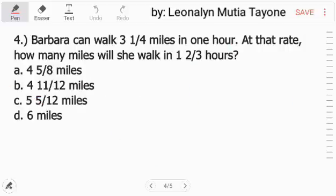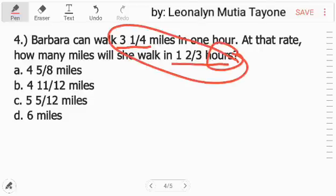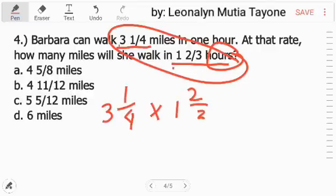Question number 4, Barbara can walk 3 and 1 fourth miles in 1 hour. At that rate, how many miles will she walk in 1 and 2 third hours? Just multiply it. Because in 1 hour, she walks 3 and 1 fourth miles. What if it's 1 and 2 third hours? Just multiply. 3 and 1 fourth times 1 and 2 third.